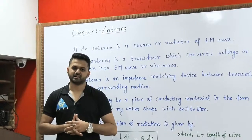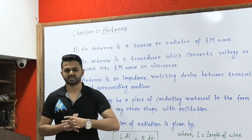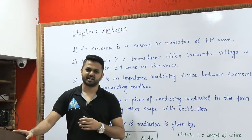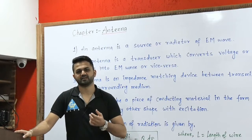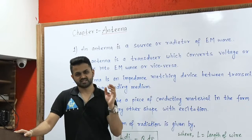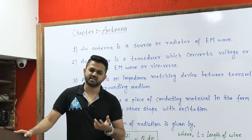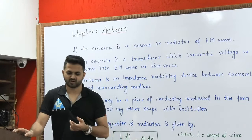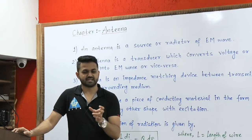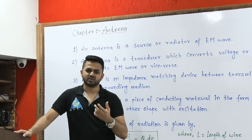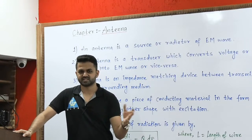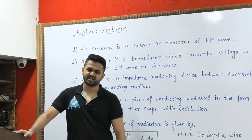The next chapter is antenna. So far we have discussed about plane wave, transmission line, and waveguide, and you have seen that these chapters are very important with many questions asked from them. Before studying the antenna chapter, you have to study electrostatics and magnetostatics because there are some topics like electric field intensity, radiation, and coordinate systems that you will need.